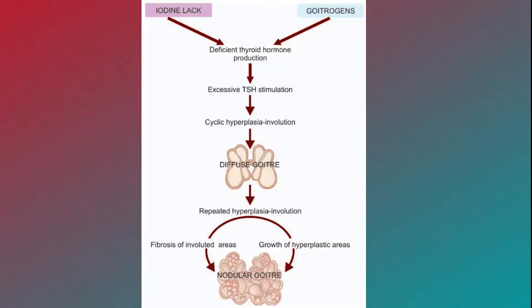Firstly, when dietary lack of iodine occurs, or goitrogens — substances that disrupt the production of thyroid hormones by interfering with iodine uptake in the thyroid gland — all of this leads to deficient thyroid hormone production, causing excessive TSH stimulation, which leads to cyclical hyperplasia and involution. Secondly, this can transform to diffuse goiter, or after repeated hyperplasia and involution, it can transform to nodular goiter finally.